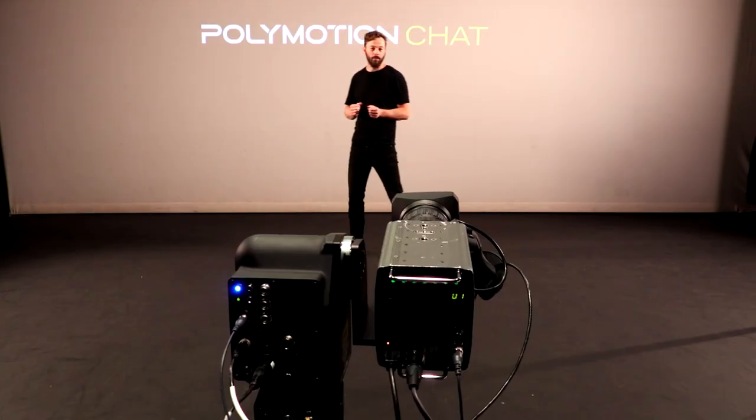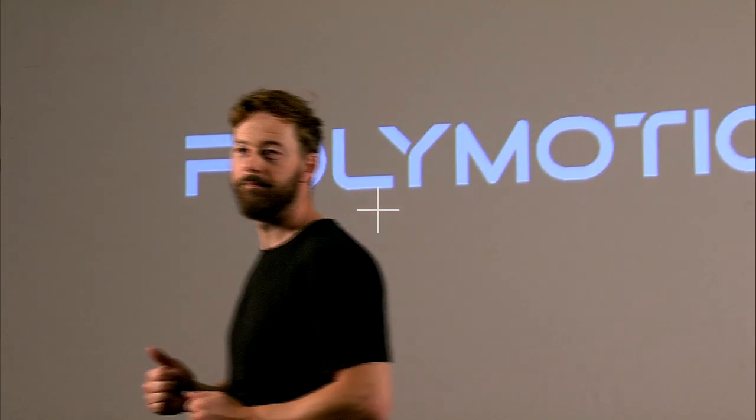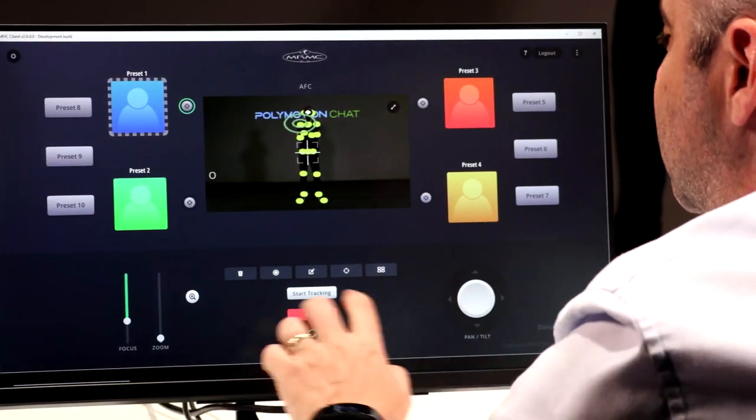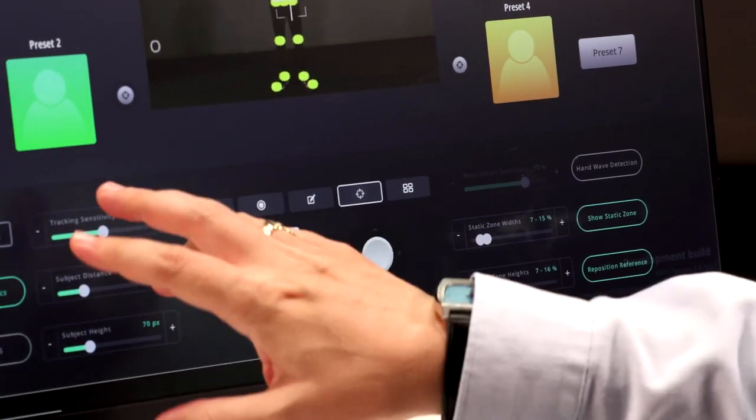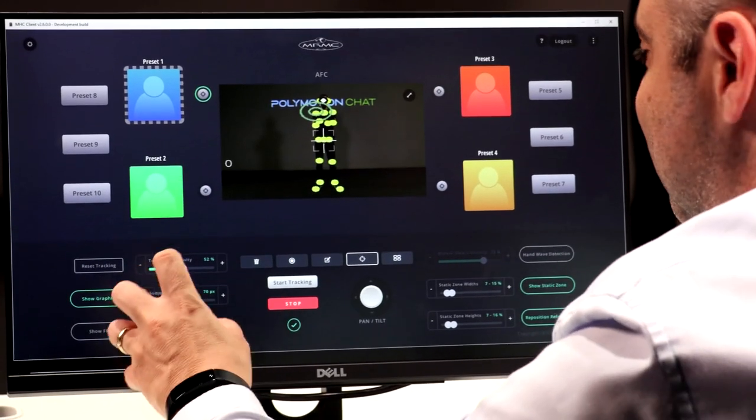Pretty much any way that you want to compose your shot, you can set that up as a preset with or without automatic tracking. The main screen here controls everything you need. You can change your tracking sensitivity, your subject distance, your speed.